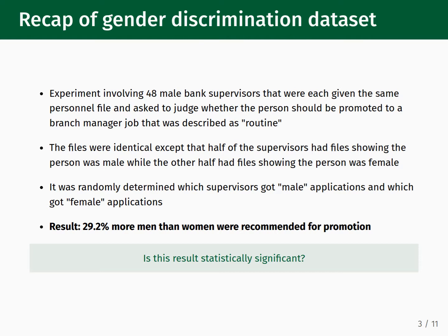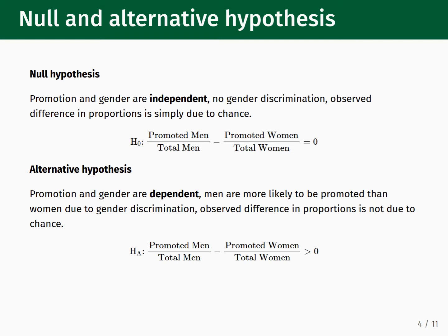The key question is whether this result is statistically significant, which requires a hypothesis test. The null hypothesis is that promotion and gender are independent — there is no gender discrimination — and any observed difference in proportions is simply due to chance. The alternative hypothesis is that promotion and gender are dependent, men are more likely to be promoted than women due to gender discrimination, and the observed difference in proportions is not due to chance.